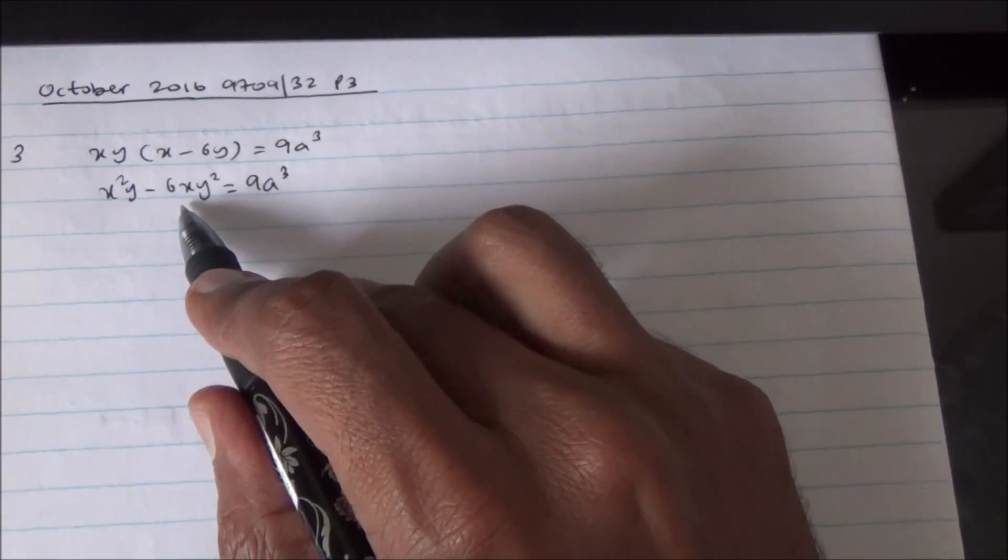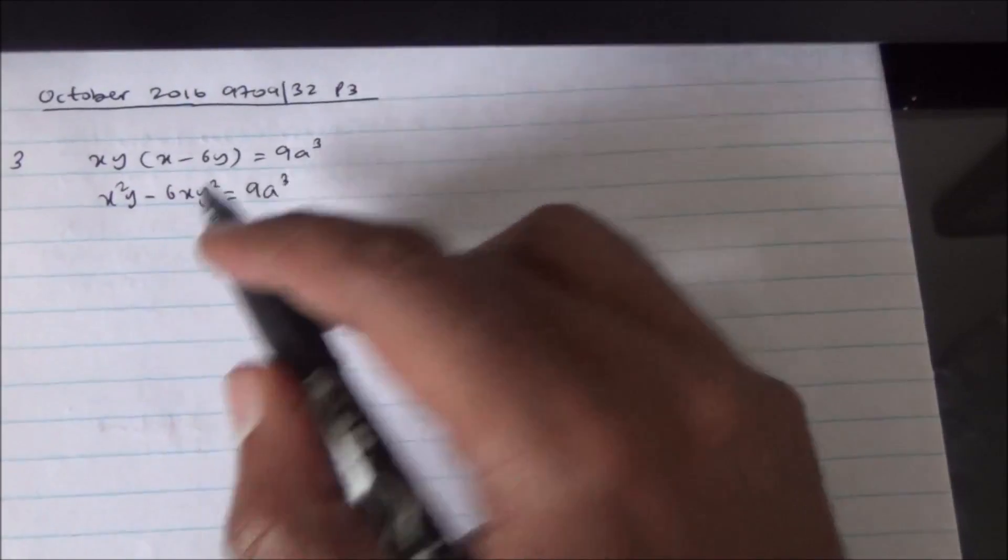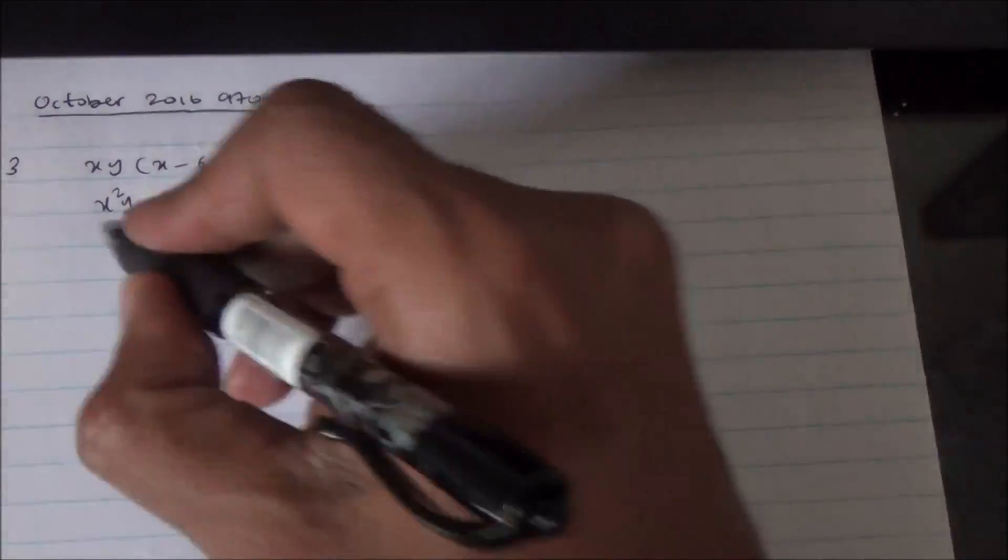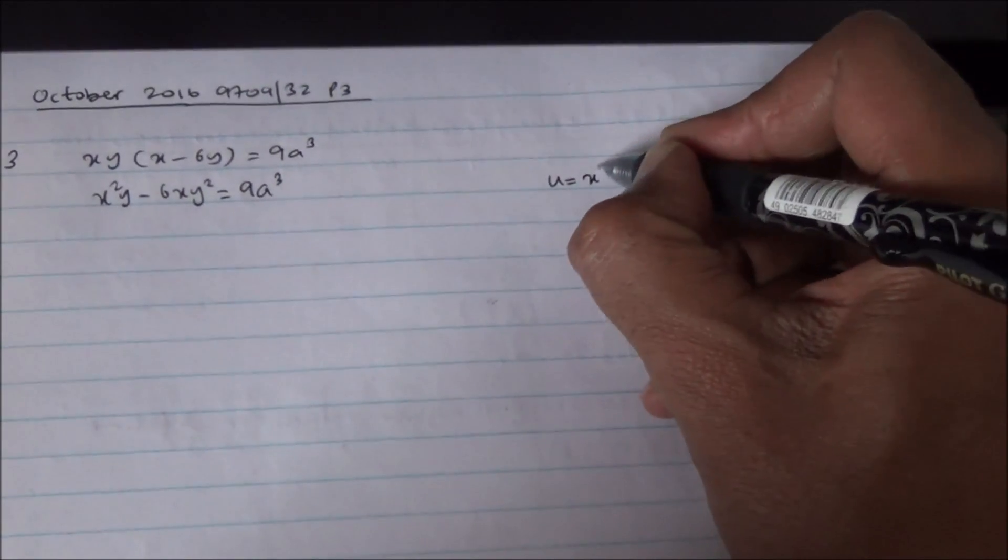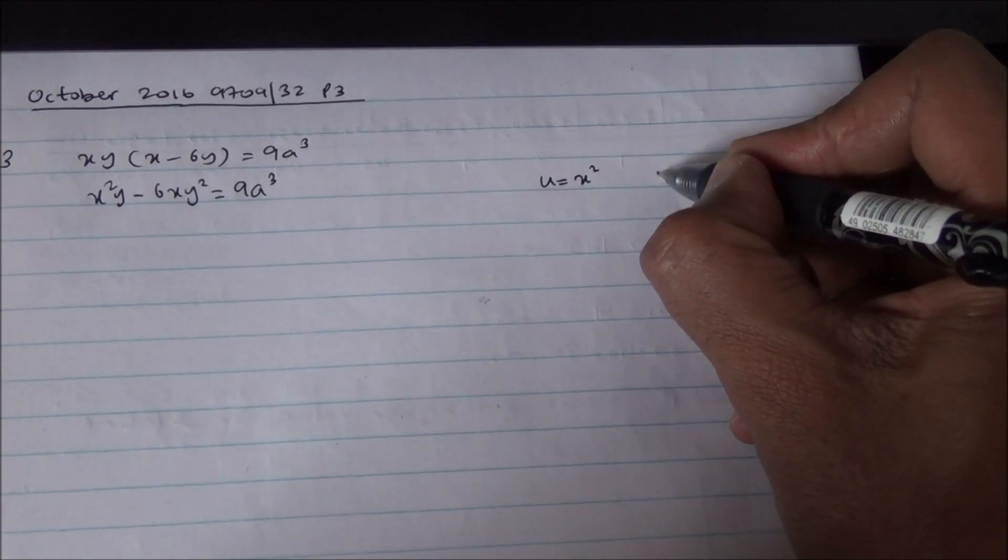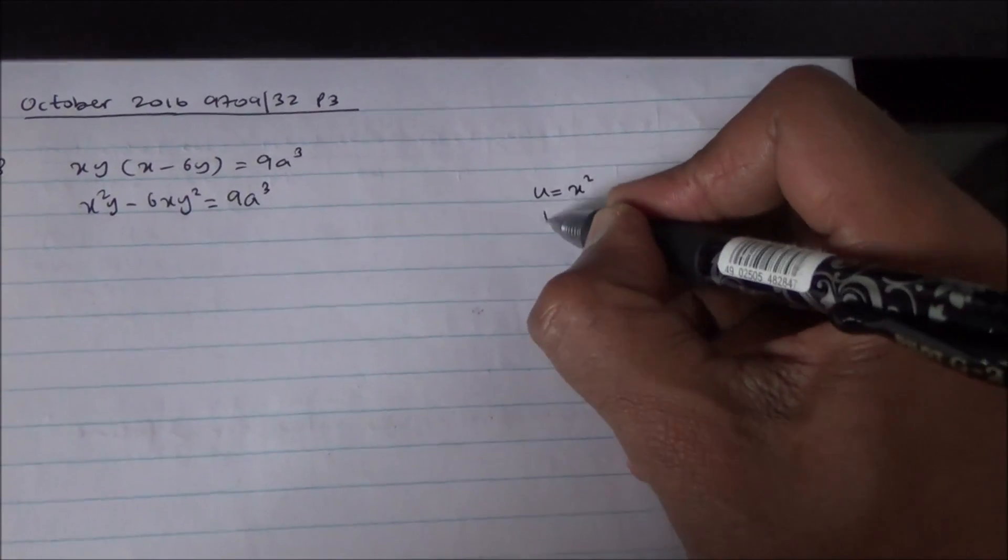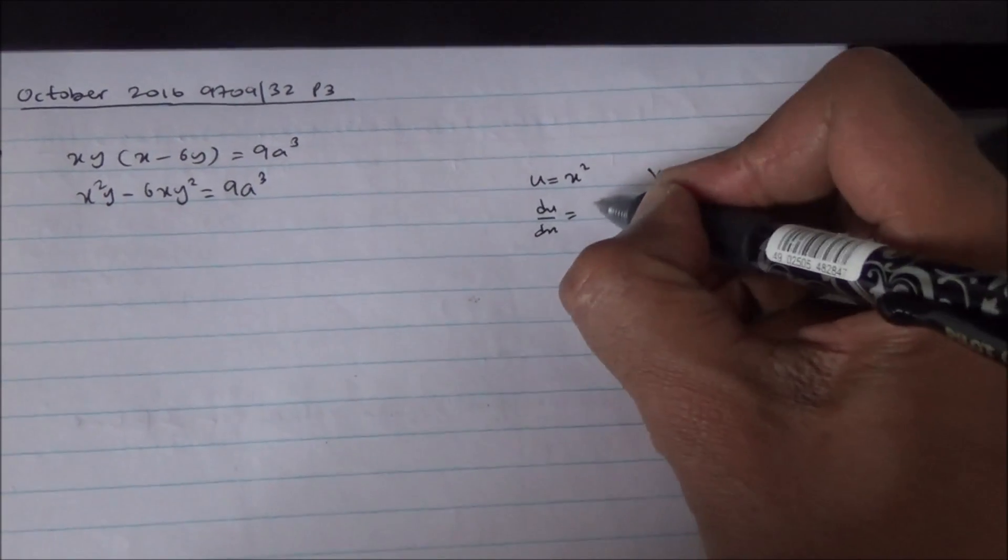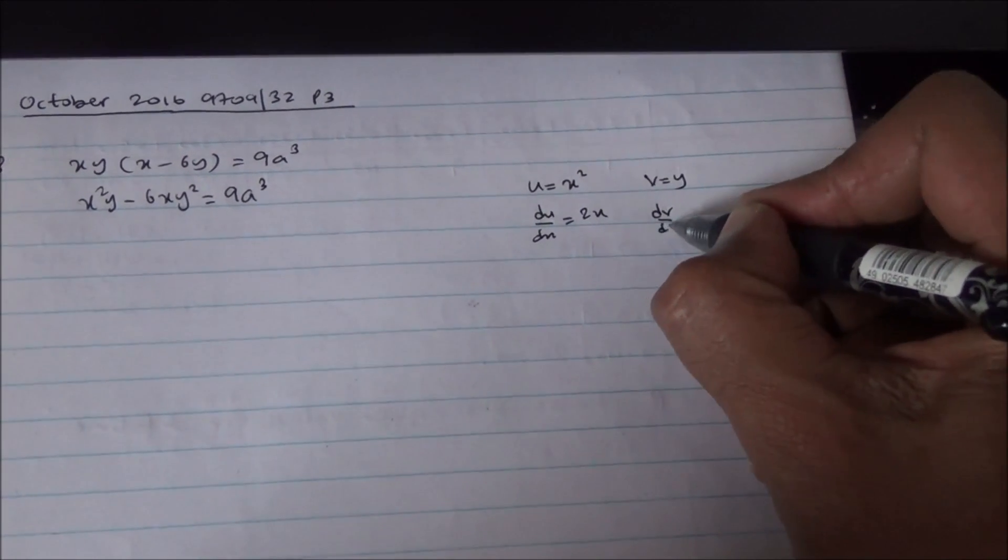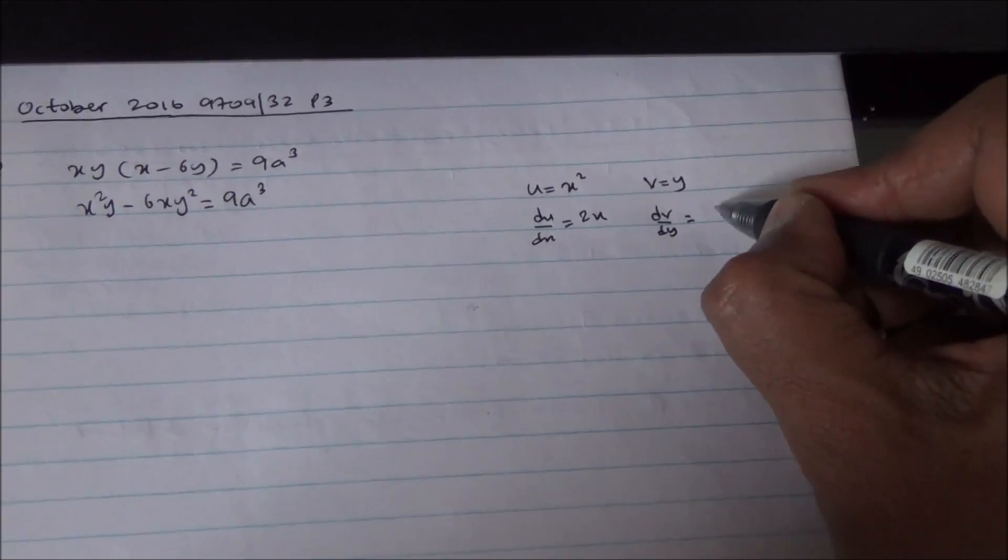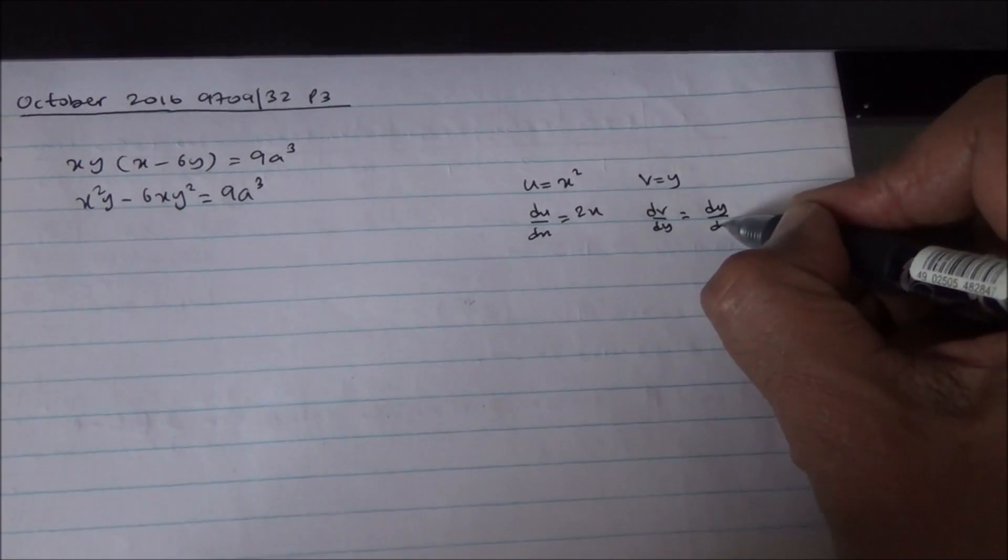This is definitely an implicit function. Therefore, we can differentiate this separately by calling x squared to be u, and then v is going to be equal to y. And we know that du over dx is going to give us 2x, while dv over dy is going to give us dy by dx times 1.